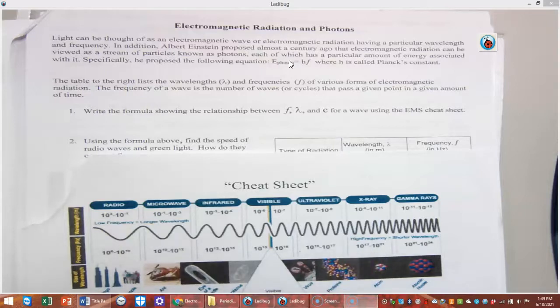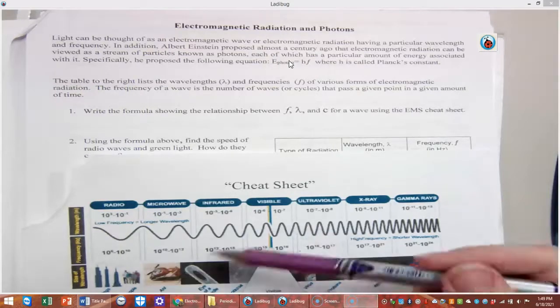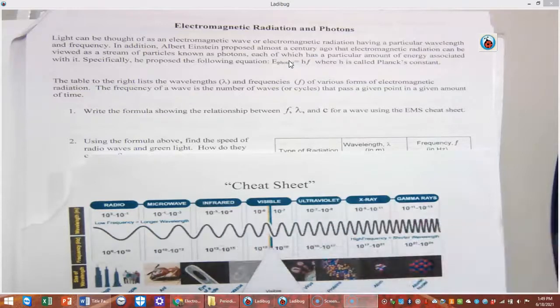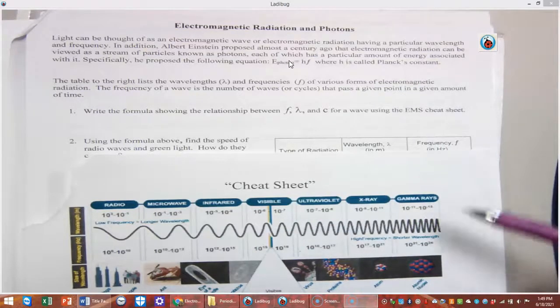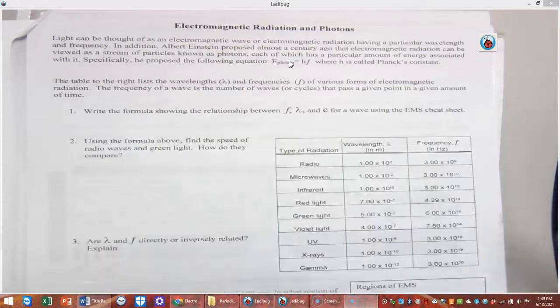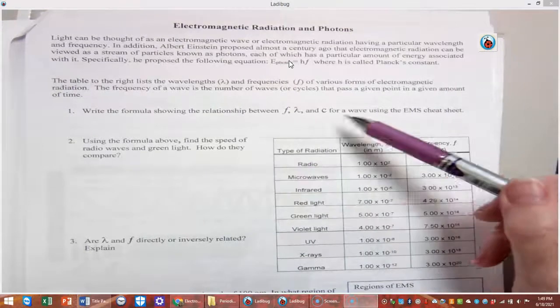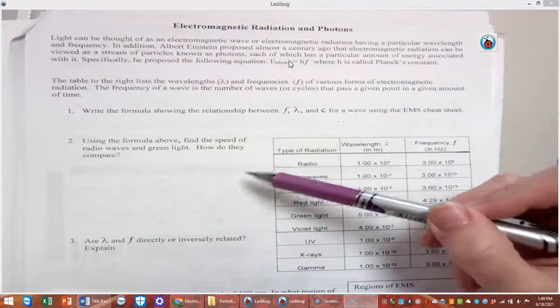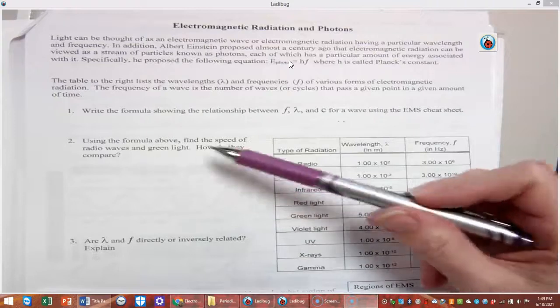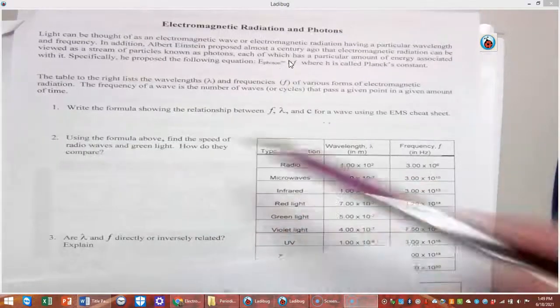And the frequency of a wave, remember, is the number of waves that pass a given point in a given amount of time. So right here we're going to use the formulas, this formula here, to solve for what? The speed of radio waves and green light, and we're going to compare the two of them.